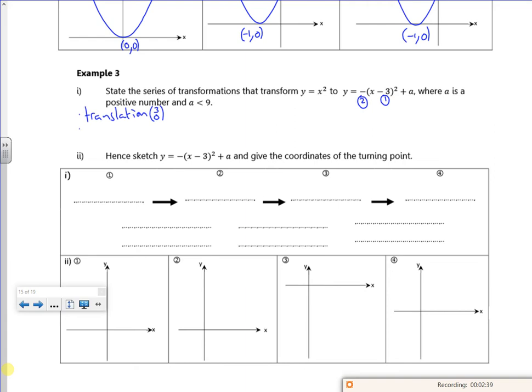Second one is a reflection in the x axis. Third one is a translation 0, plus a. Make sure that's a plus a there.